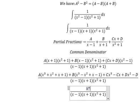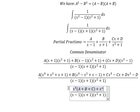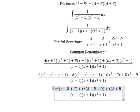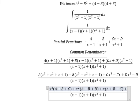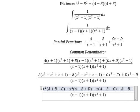About x to the power of 3, we have A plus B plus C. About x squared, we have A minus B plus D. About x, we have A plus B minus C. About the numbers, we have A minus B minus D.